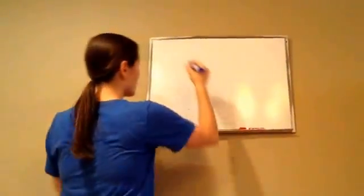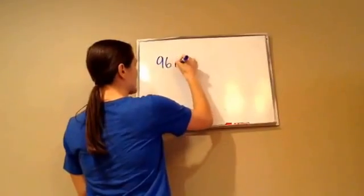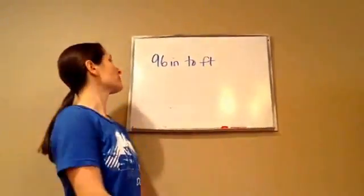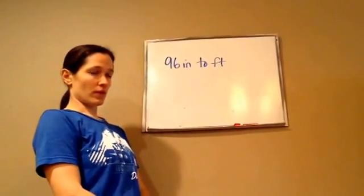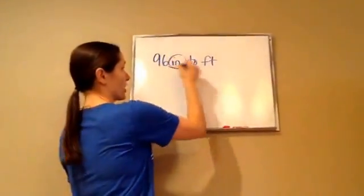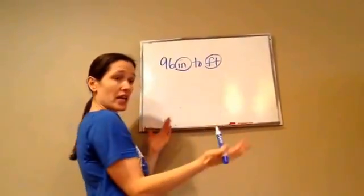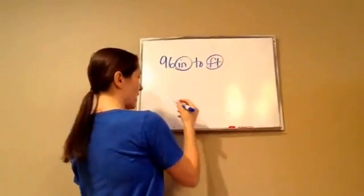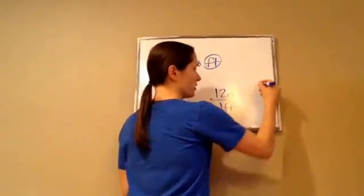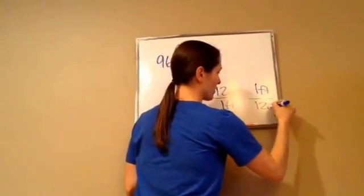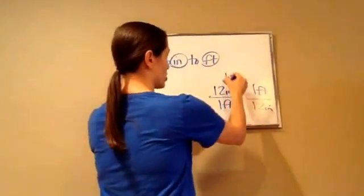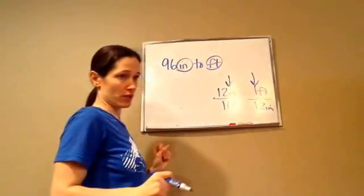Now let's convert 96 inches to feet. What's my first step? Because we're looking at inches and feet, we need to come up with the correlation of inches and feet. How many inches are in a foot? 12 inches, same thing as 1 foot. And 1 foot is the same thing as 12 inches. Now, if I'm going inches to feet, which one am I going to choose — this one or this one? The first one? Well, I'm wanting to go to feet.